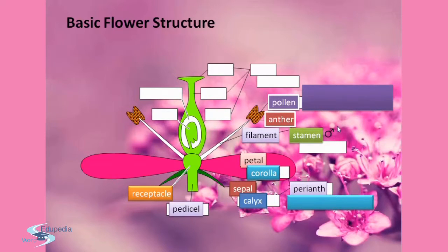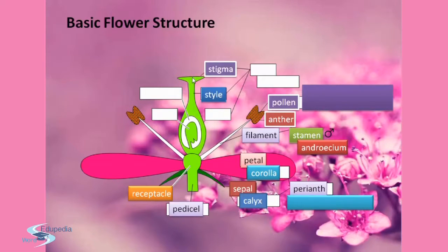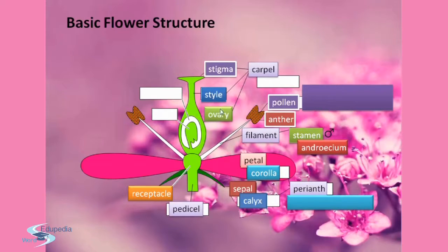The stamen is indicated by this sign and is also known as the androecium. This is the stigma, which is the female reproductive part — the part of the pistil where pollen germinates. This is the style. And this is the ovary. All these parts make up the carpel, which is the female reproductive unit of a flower, also indicated by a sign. It is also known as the gynoecium.